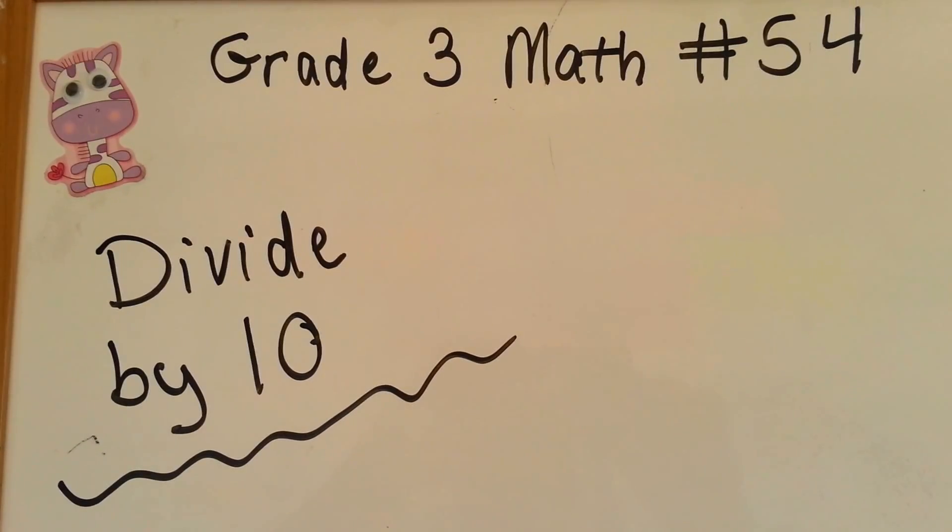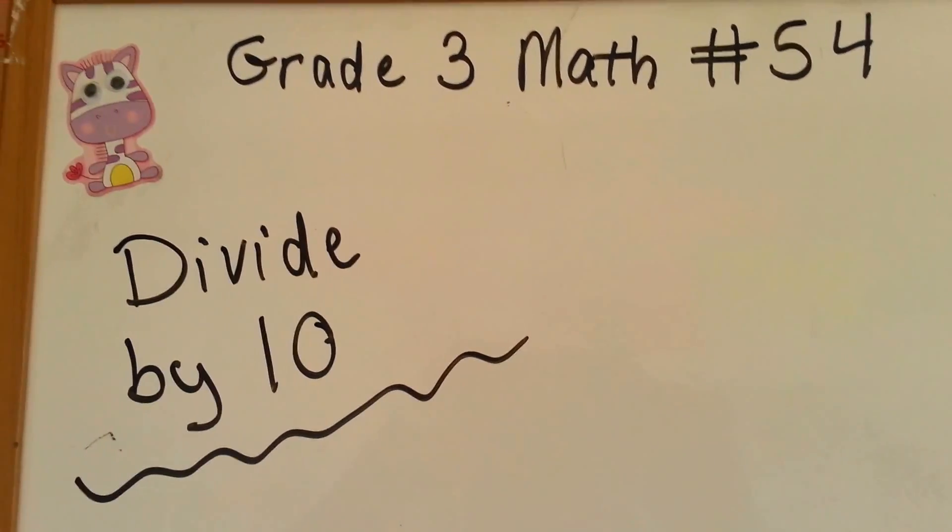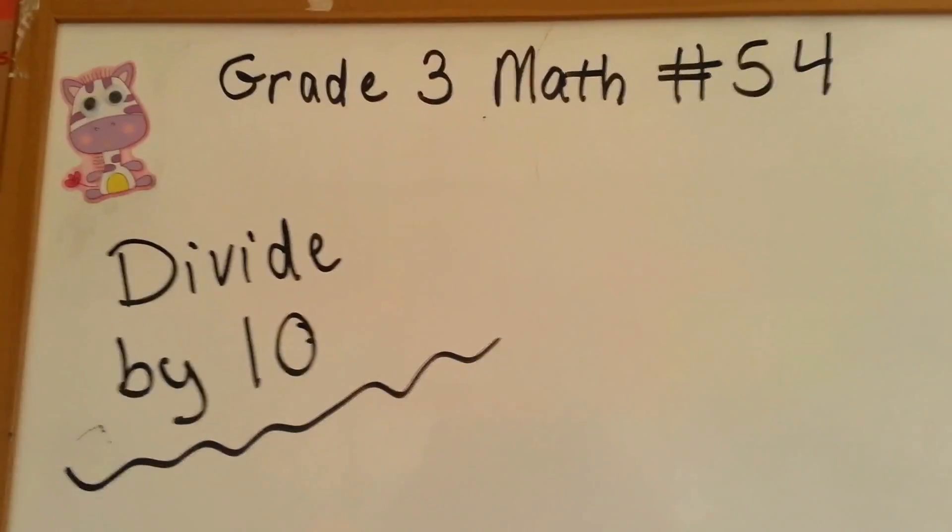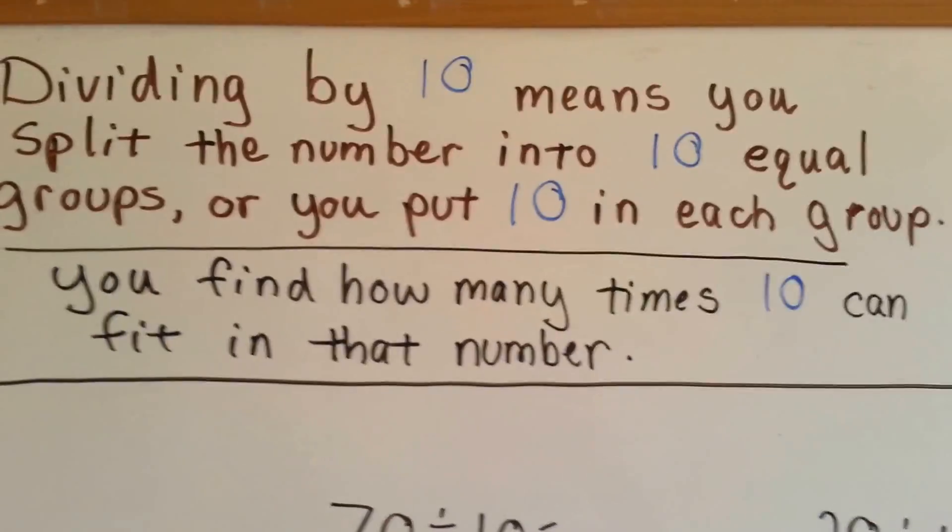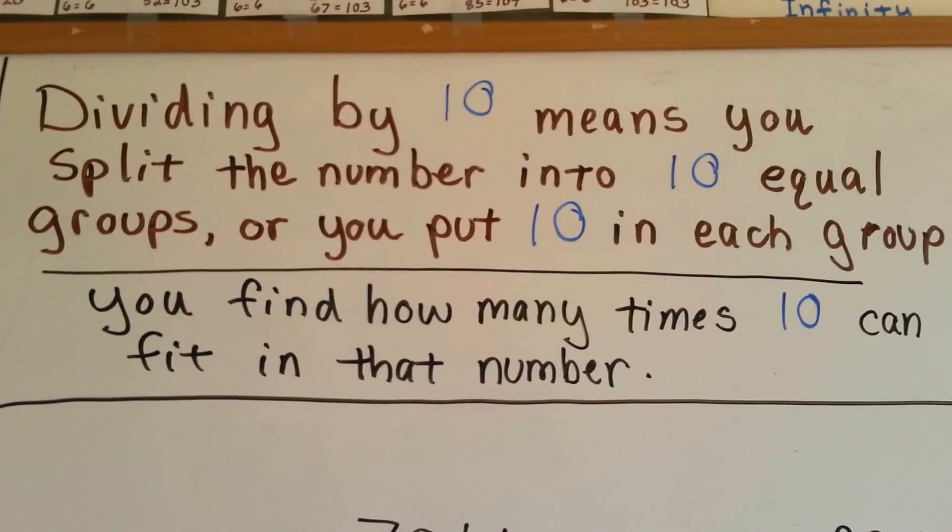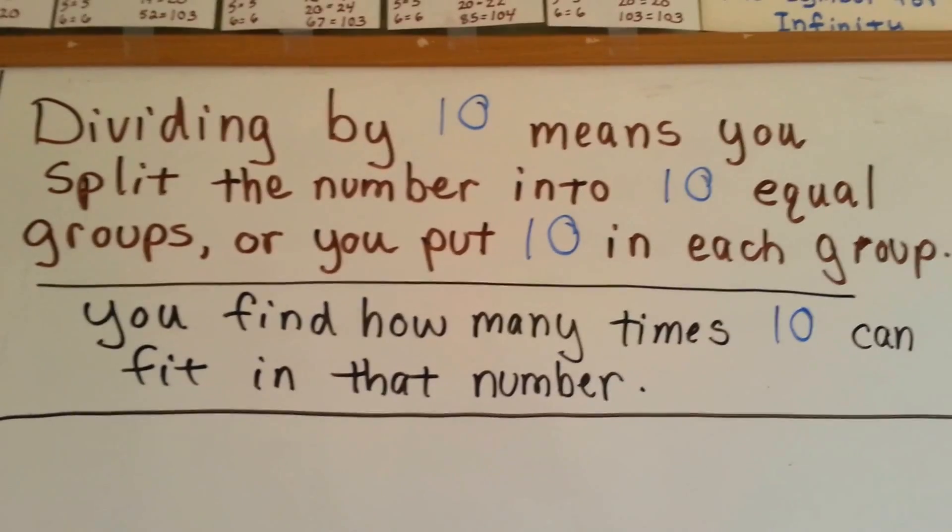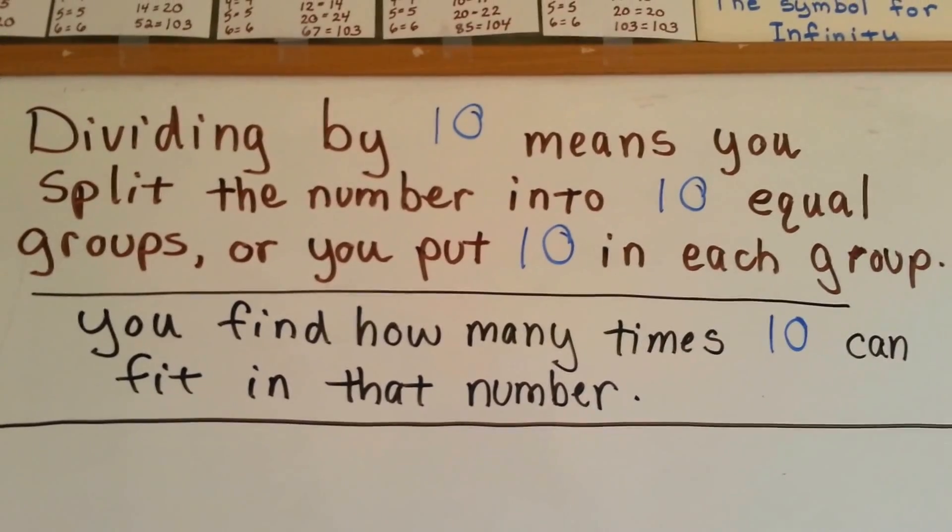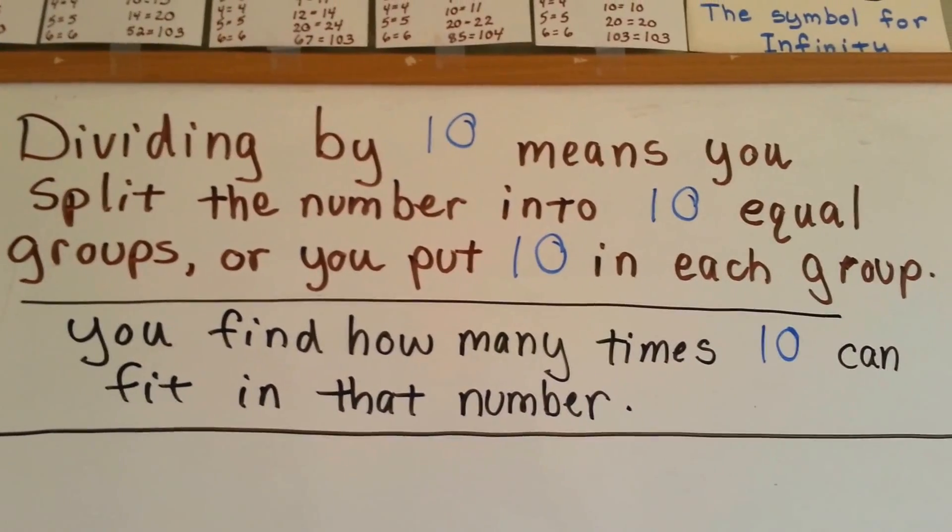Grade 3 math, number 54, divide by 10. We've been doing lots of division lately, and now we're doing the tens. Here's what I want you to remember. When you're dividing by 10, it means you split the number into 10 equal groups, or you put 10 in each group. You find how many times 10 can fit into that number.